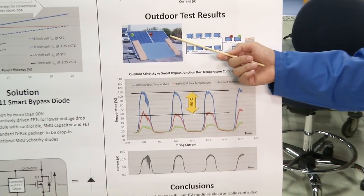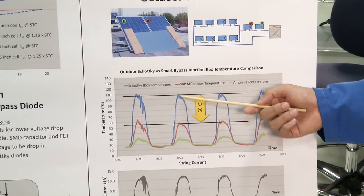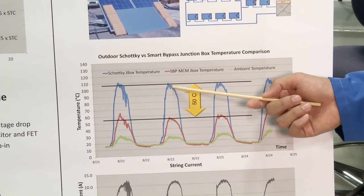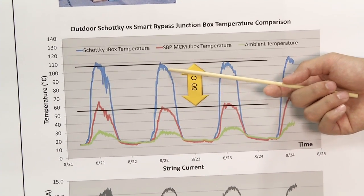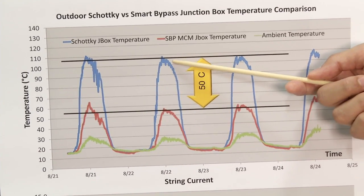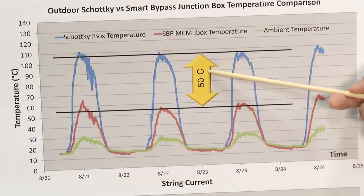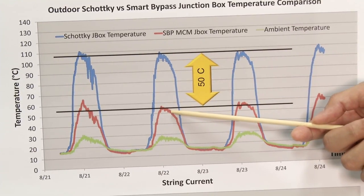We also took this junction box outside to be mounted on the panel for an outdoor test. Based on these test results, it is showcased that SM74611 exhibits less power dissipation compared to a regular diode. This will increase the reliability of PV modules. Also, our device has a lower leakage current compared to a Schottky. For more information, you can go to the website on your screen. Thank you for your attention and have a nice day.